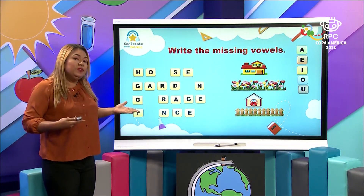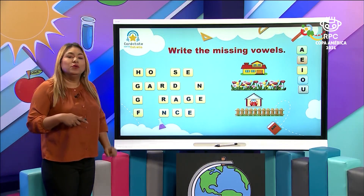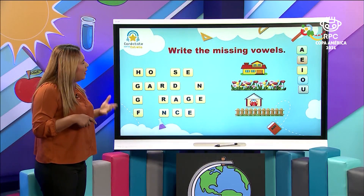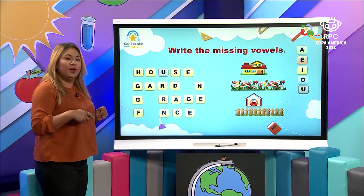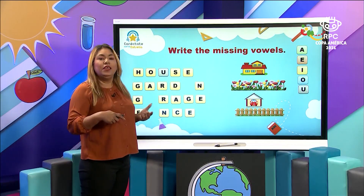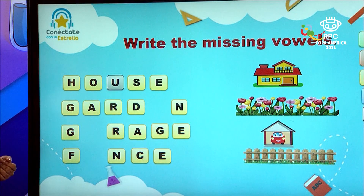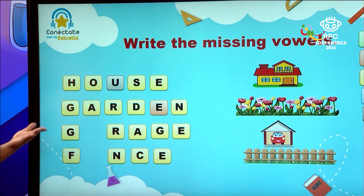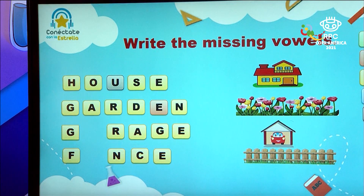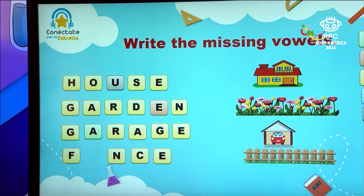Could you please help me to complete the word? House — what is the missing vowel? Correct, the U is the missing vowel: house. Next we have the word garden — what is the missing vowel? E — it says garden. Then we have the word garage — E is the missing vowel. And at the end we have the word fence.